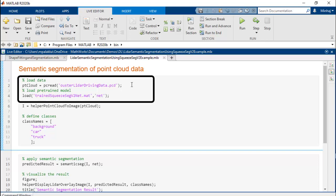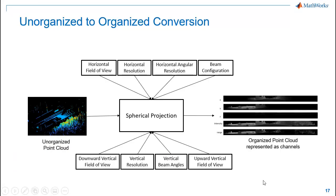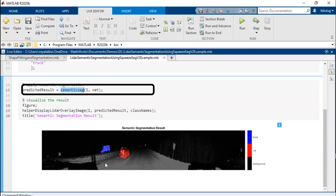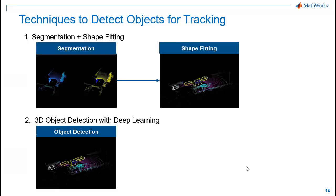We'll first load our data and a pre-trained SqueezeSegV2 network. To apply the network, we'll preprocess the point cloud using a helper function. This function first converts the unorganized point cloud into an organized point cloud by projecting it onto a sphere. To do this, we need sensor parameters like field of view, resolution, and beam configuration. After this conversion, it extracts the intensity image from the organized point cloud. Now we'll define the classes and apply the pre-trained SqueezeSegV2 network on our data. The output from the network shows the intensity image segmented into car, truck, and background.